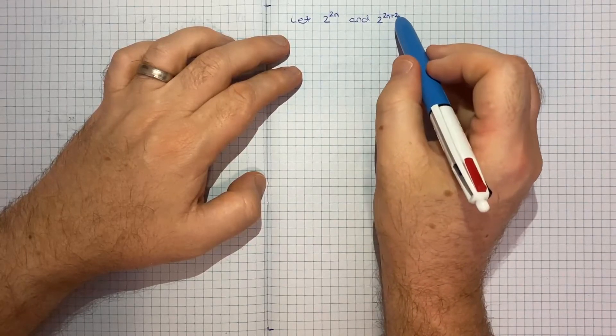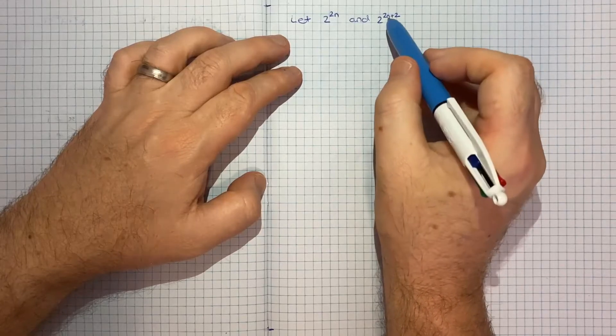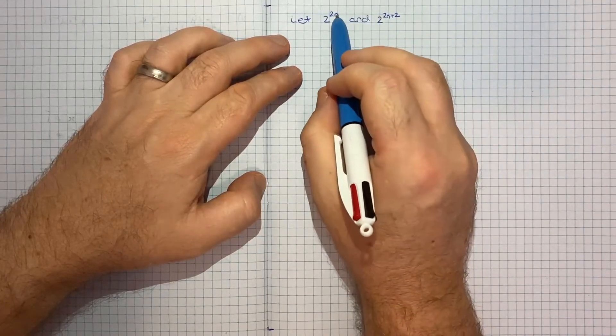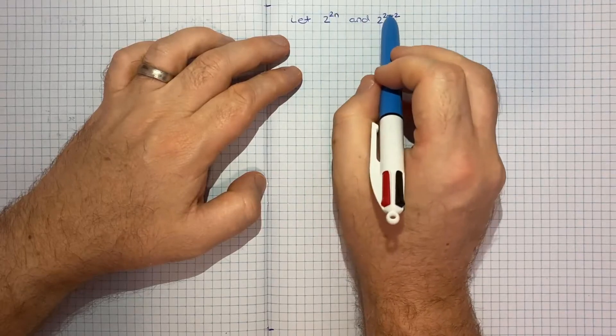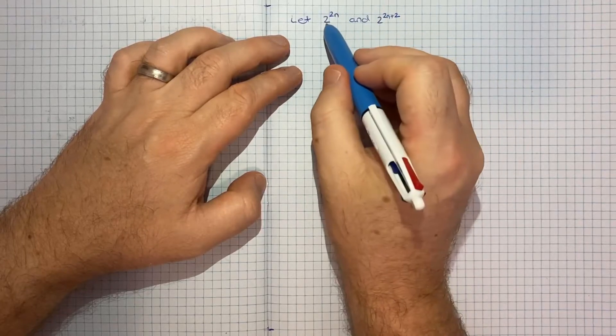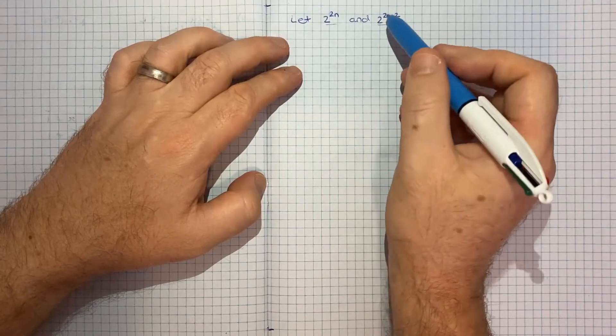And notice how I've had to add plus 2 because if I go plus 1 then I'll get an odd number but I want the consecutive even powers. So I think this is the key to the question, just simply defining what we're dealing with.